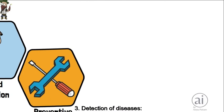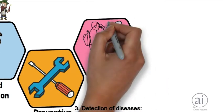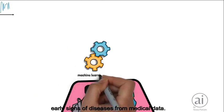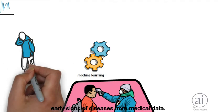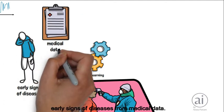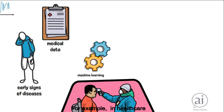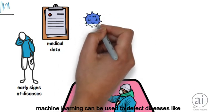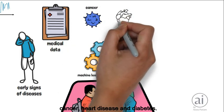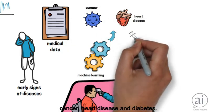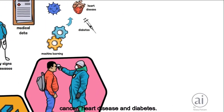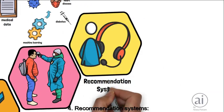Detection of diseases: machine learning can be used to detect early signs of diseases from medical data. For example, in healthcare, machine learning can be used to detect diseases like cancer, heart disease, and diabetes.